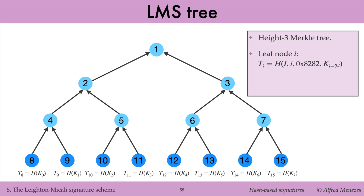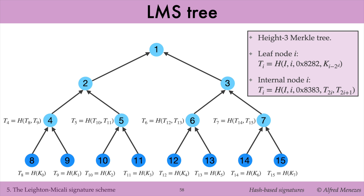The hash value T_i held in the leaf numbered i is computed by hashing the tree identifier I, the leaf node number i, the 2-byte constant 8282, and the OTS public key indexed by i minus 2^D. The hash value T_i held by an internal node numbered i is derived by hashing the tree identifier I, the leaf node number i, the 2-byte constant 8383, and the values of the two children, namely T_{2i} and T_{2i+1}. The long-term public key for the Merkle tree is the root hash value T1.